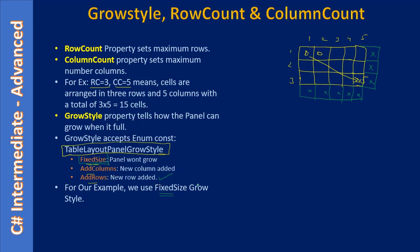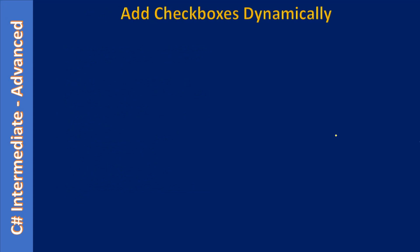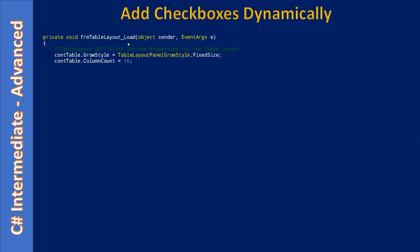In our example we are going to use the FixedSize property, which means we will not allow further growth of the layout. In the form load event, we set the GrowStyle property of our table layout container to FixedSize. Then we set ColumnCount to 16 — because one column is occupied by our label, and in each row we want to add 15 bits, so column count is set to 16.